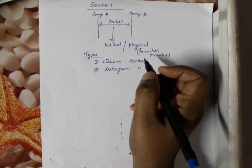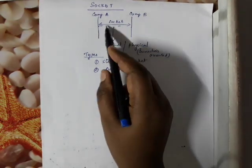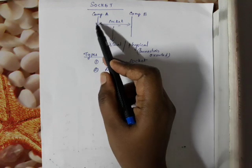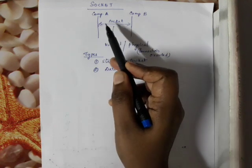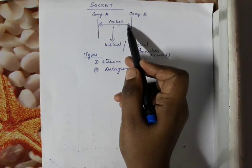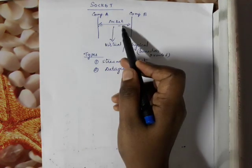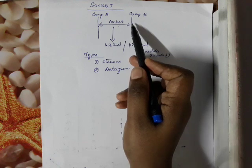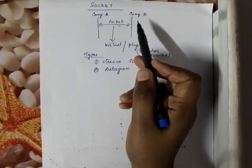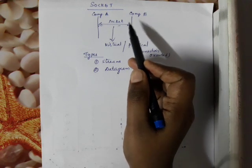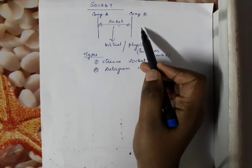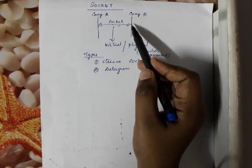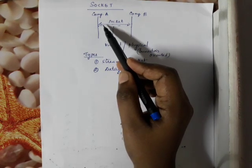The second type is datagram socket. Datagram socket is bidirectional data flow. If you want to send 10 data packets, you send them as individual messages: message 1, message 3, message 4, message 7. With datagram socket, you receive messages in a different order from the sequence in which they were sent.